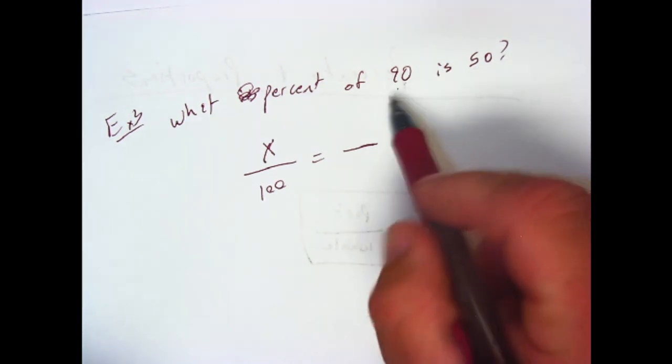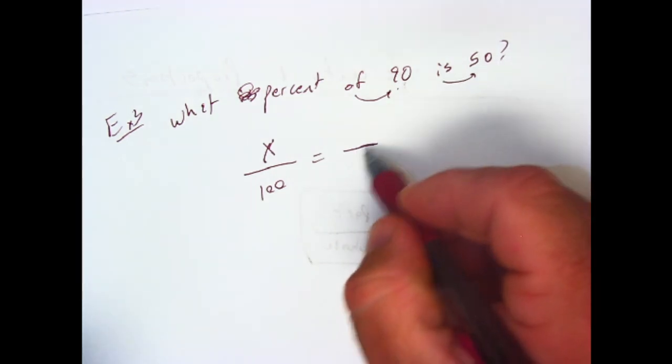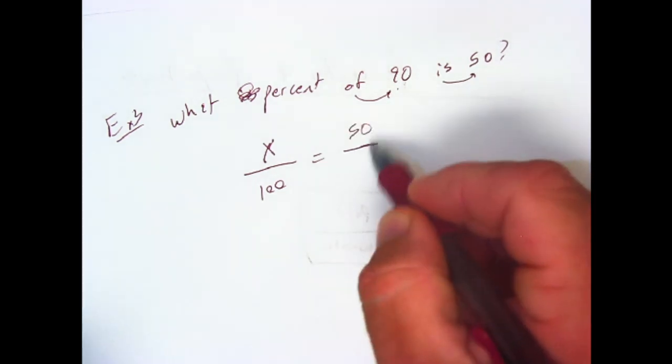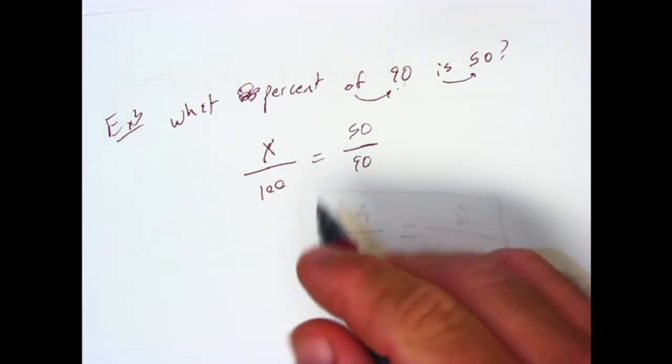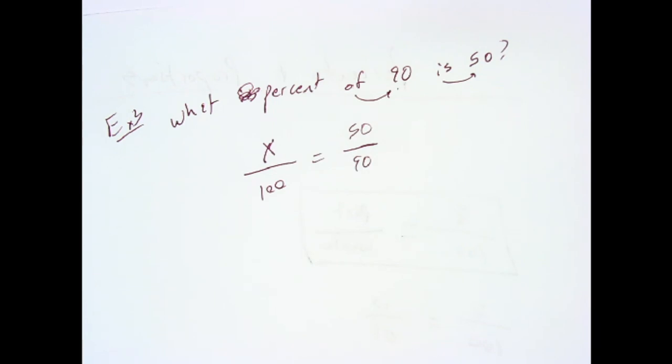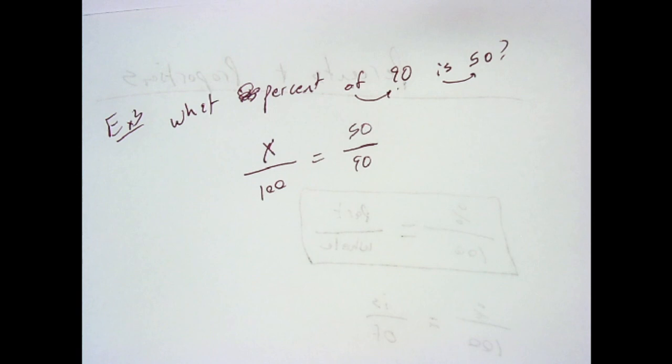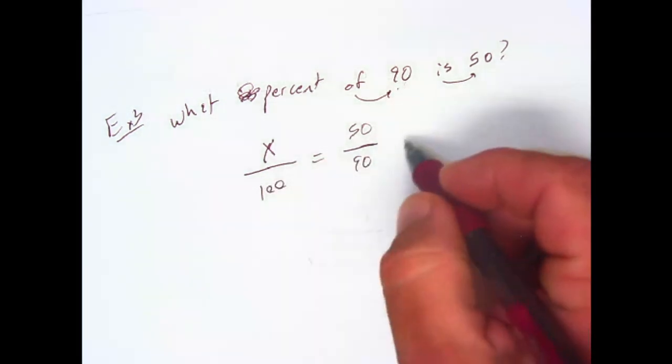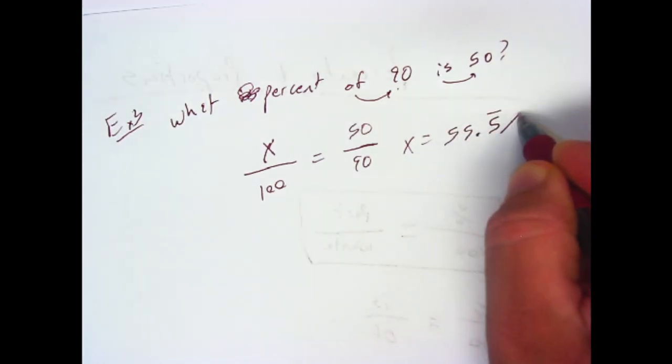So it says of 90 is 50. So is is going to be the part on top, of 90 is the whole. Cross multiplying, 50 times 100 is 5,000. And then we divide that by the 90, and we get x is equal to 55.5 percent.